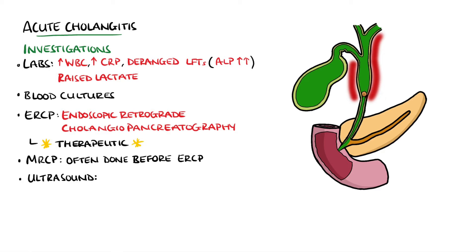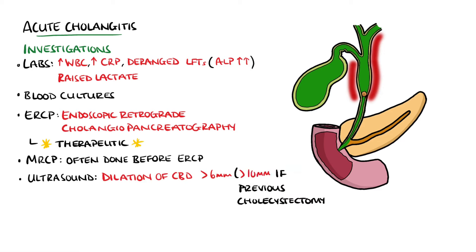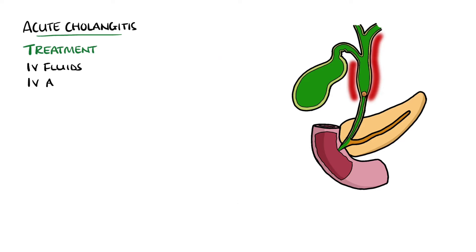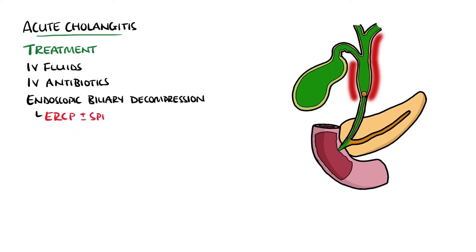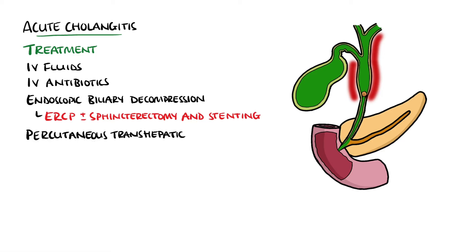Ultrasound scanning of the biliary tract will typically show dilation beyond 6mm in those who have not previously had a cholecystectomy, or more than 10mm in those who have. Treatment will involve IV fluid resuscitation, IV antibiotics, and endoscopic biliary decompression, typically done via ERCP, which may include a sphincterotomy and stenting. In patients who are too unwell to undergo an ERCP, percutaneous transhepatic cholangiography is a second line option.